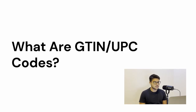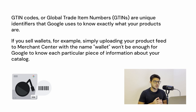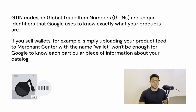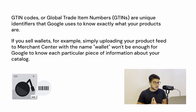What are GTIN and UPC codes? GTIN codes, or Global Trade Item Numbers, are unique identifiers that Google uses to know exactly what your products are. If you sell wallets, for example — let's say you have a wallet store — simply uploading your product feed or catalog to Merchant Center with just the name 'wallet' in the title won't be enough for Google to know each particular piece of information about your catalog.